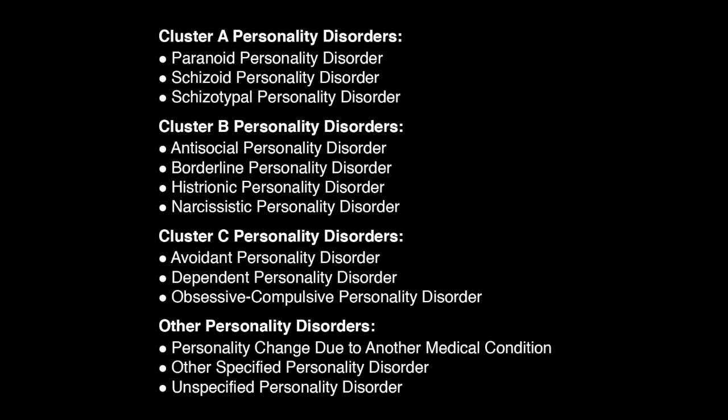Histrionic personality disorder reflects a pattern of excessive emotionality and attention-seeking. Narcissistic personality disorder reflects a pattern of grandiosity, the need for admiration, and a lack of empathy. Avoidant personality disorder is a pattern of social inhibition, feelings of inadequacy, and hypersensitivity to negative evaluation. Dependent personality disorder is a pattern of submissive and clinging behavior related to an excessive need to be taken care of. Obsessive-compulsive personality disorder is a pattern of preoccupation with orderliness, perfectionism, and control. There is also a category called personality change due to another medical condition, referring to persistent personality disturbances judged to be due to the direct physiological effects of a medical condition, for example, frontal lobe lesions.